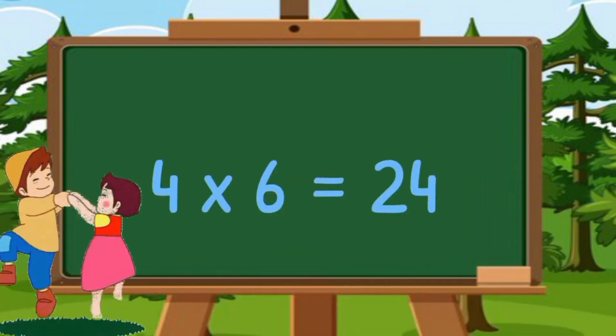17 1's are 17. 17 2's are 34. 17 3's are 51. 17 4's are 68. 17 5's are 85. 17 6's are 102. 17 7's are 119.